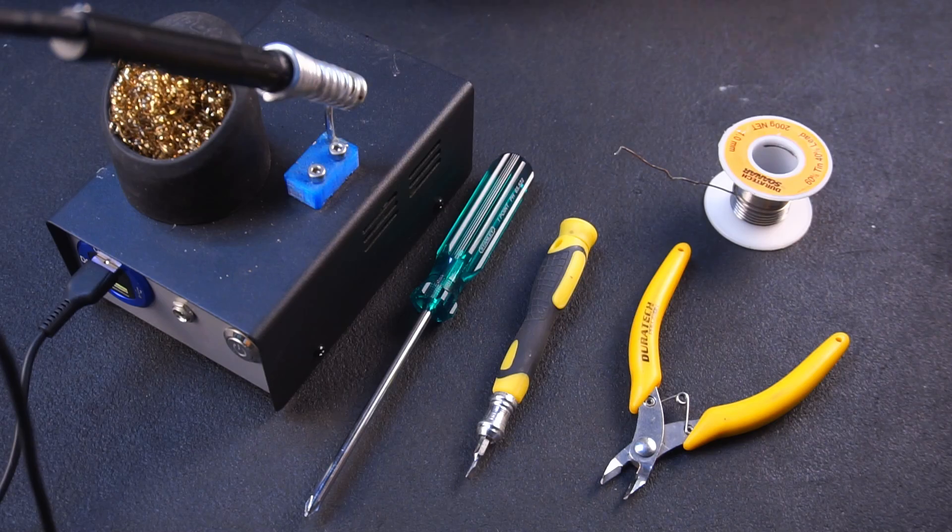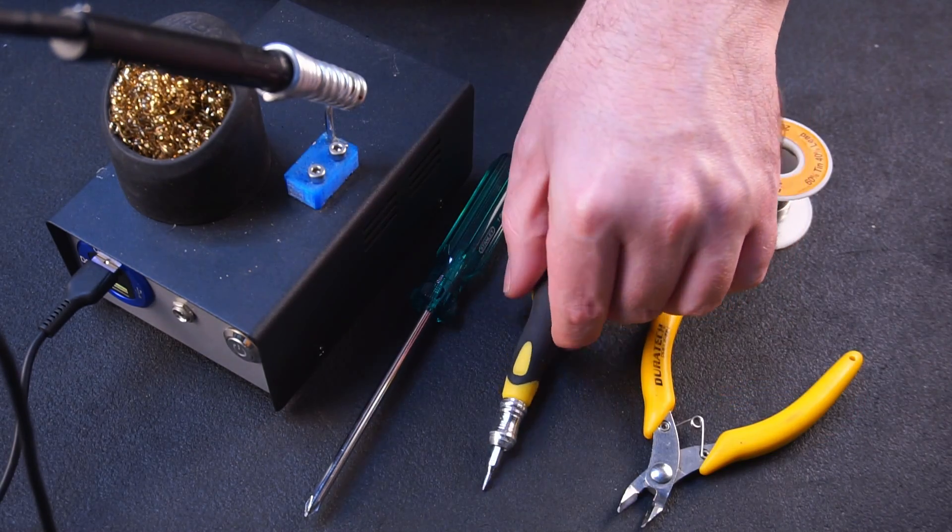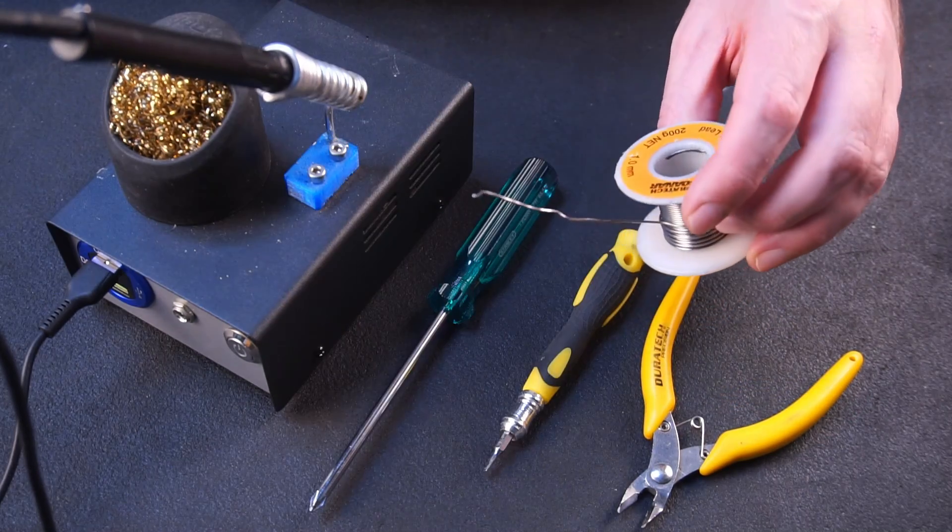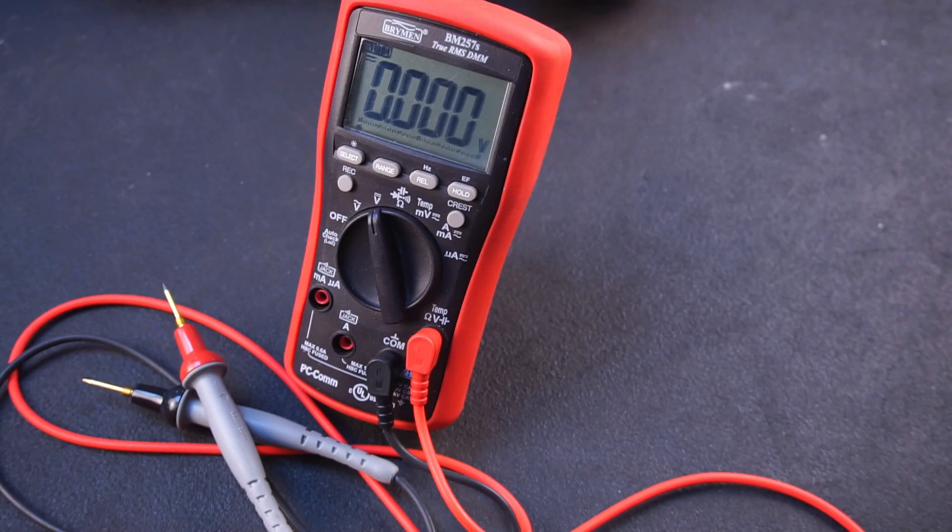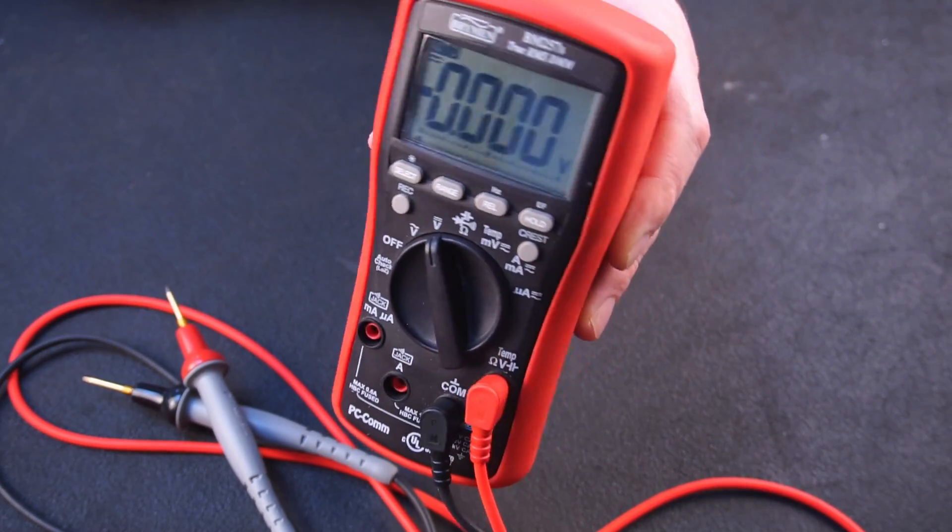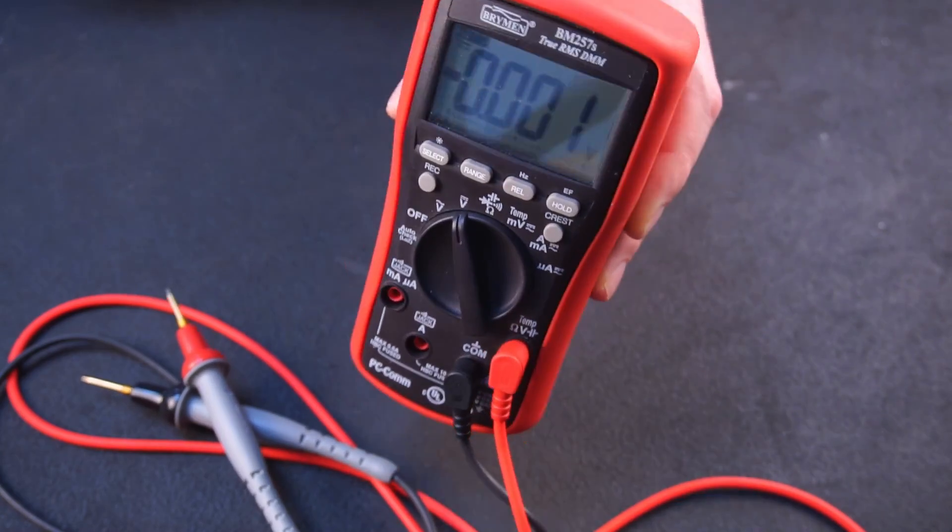To assemble the kit set you'll need a pair of cutters, a couple of screwdrivers, solder and of course a soldering iron. A multimeter is also required to adjust the voltage to your requirements at the end of assembly.